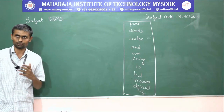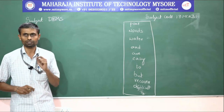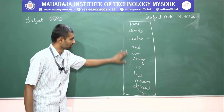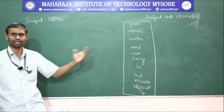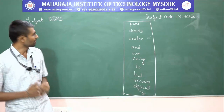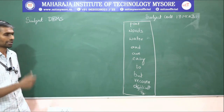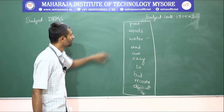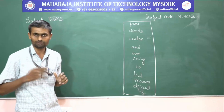Before entering into today's topic, I'll take a simple example through which we'll try to enter into the subject. Here I have written a few words — look at this — some English words: power, words, water, and, or, easy, to, but, recover, difficult, to, something like this. With these words, can you frame a meaningful sentence? By picking each word from this set systematically, we can make up one meaningful sentence — it could be an English proverb.